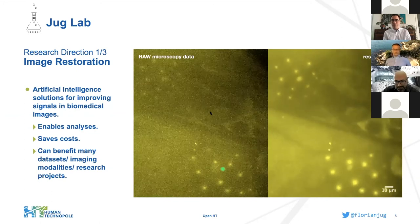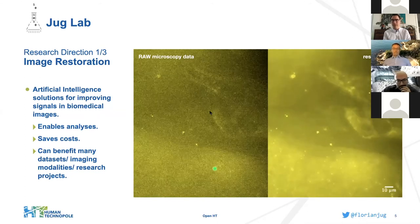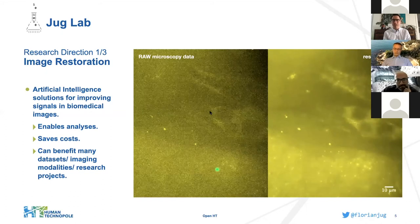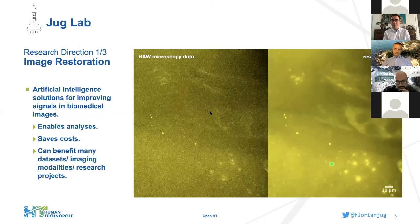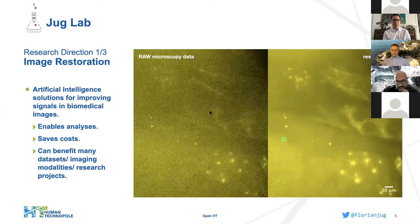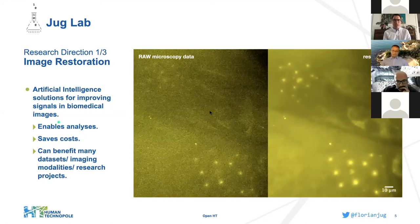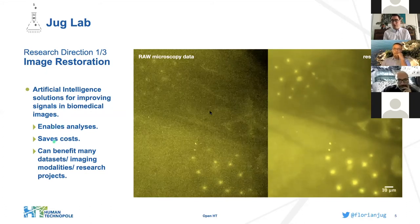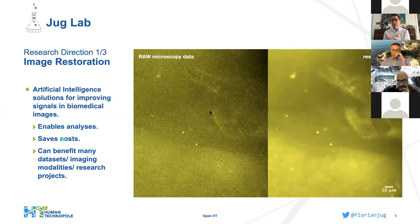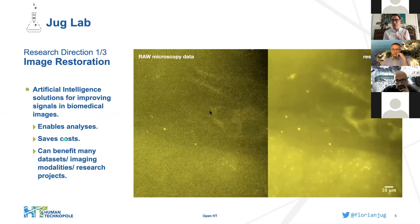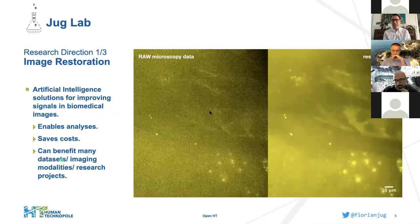The first is image restoration — a set of methods that take images which are hard to analyze for humans, and in particular very hard to analyze with automated routines, and clean them up to make analysis significantly easier. This is all enabled by artificial intelligence, in particular deep learning. It enables the analysis, can save costs by allowing you to work with less expensive machines or run them more efficiently and with less time — which also has a direct cost benefit.